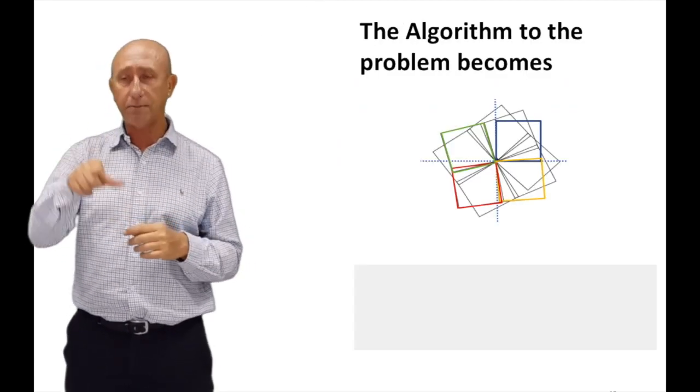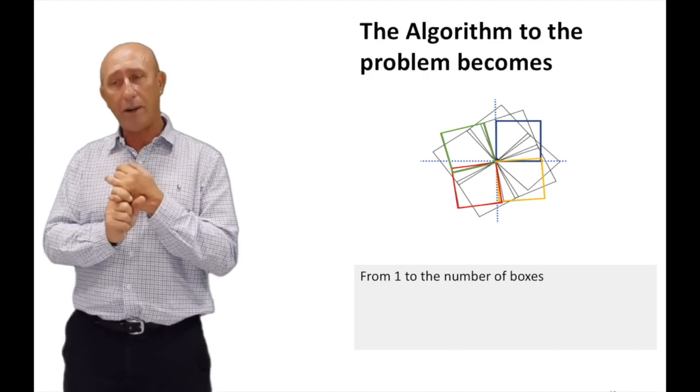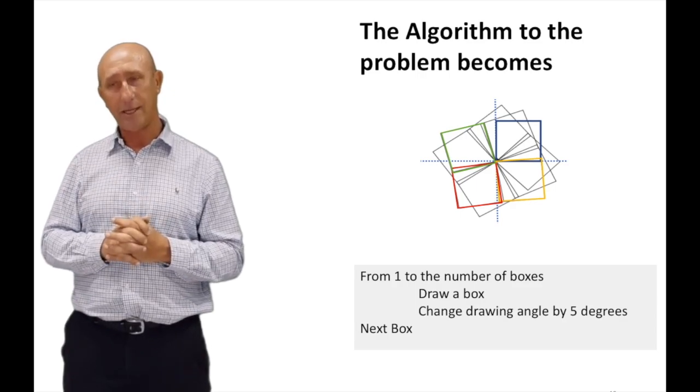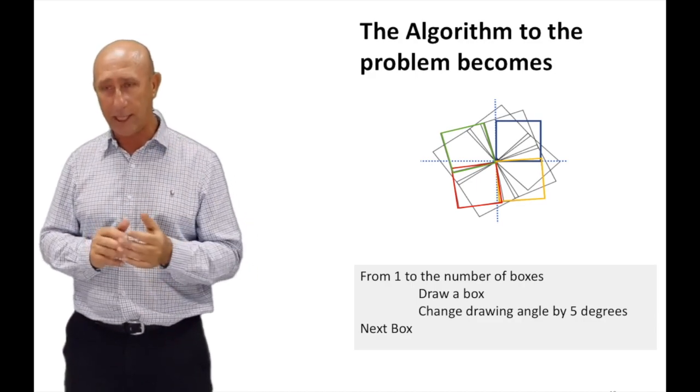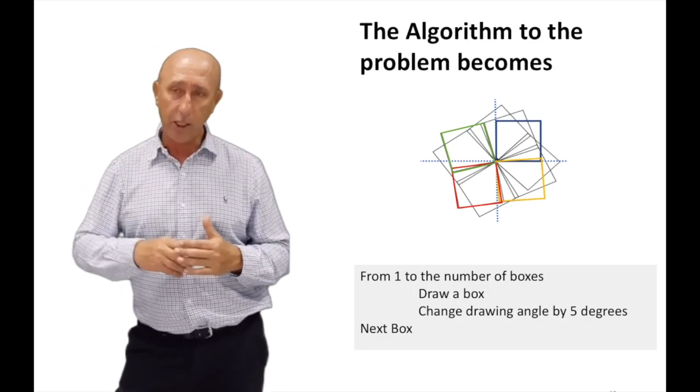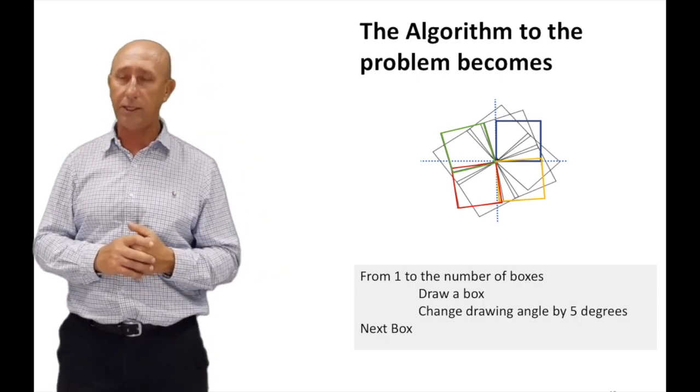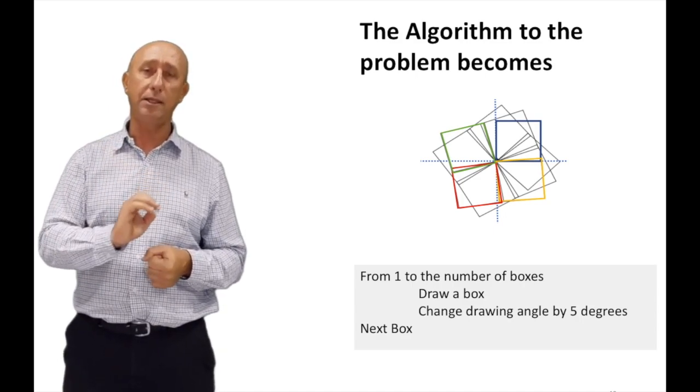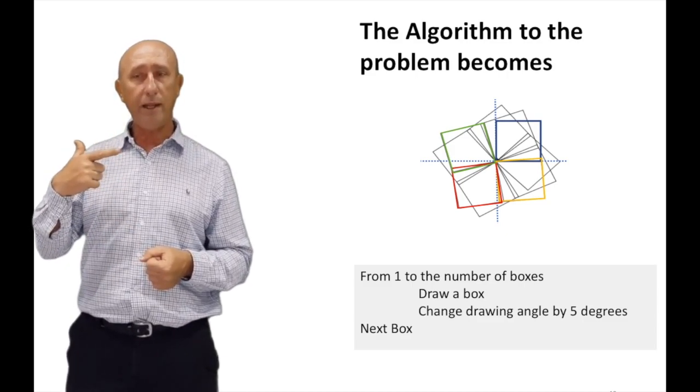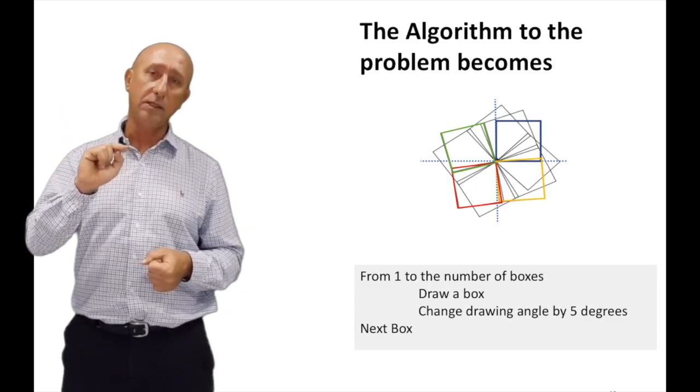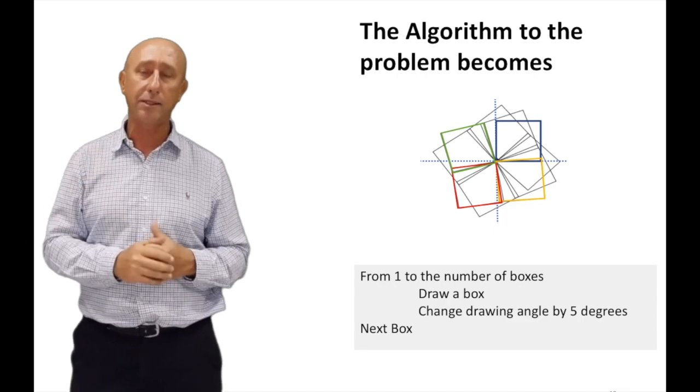So now, if we want to solve this problem, I know how to draw a square. So if I want to draw a hundred boxes, I say from one to the number of boxes, draw a box, change the angle, and go to the next box. So that is how we come up with algorithms. Again, algorithms are a huge area of study. You're not going to be an expert in coming up with an algorithm on the first day. The key to it: practice, practice, practice, practice. The more practice you have in this area, your brain starts functioning in that manner. And then you start to develop solutions to your problem a lot easier.